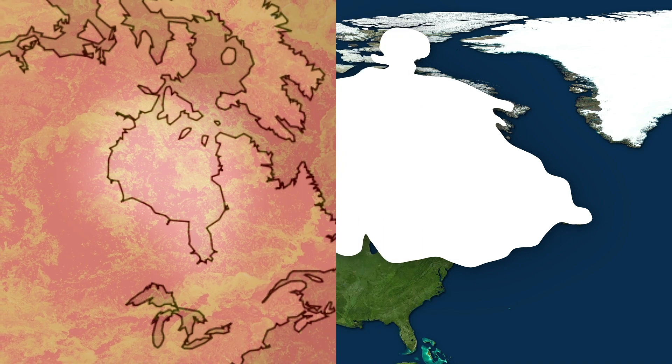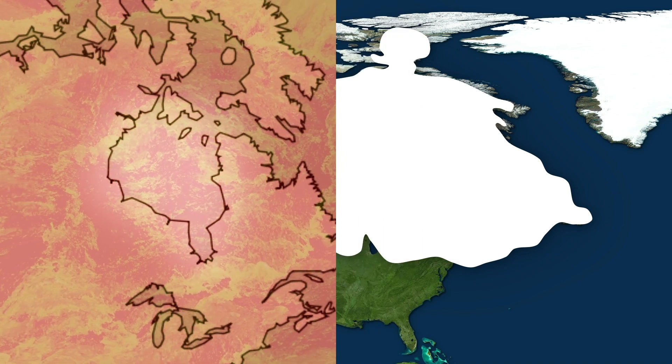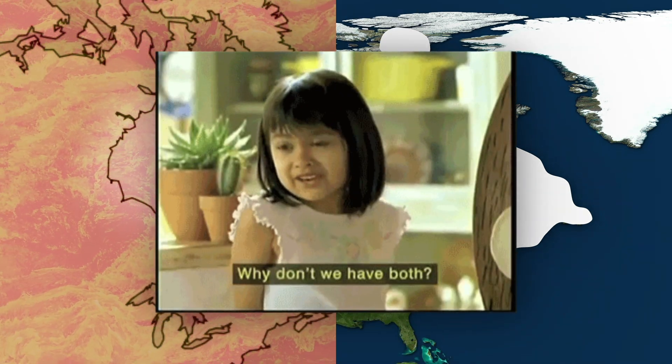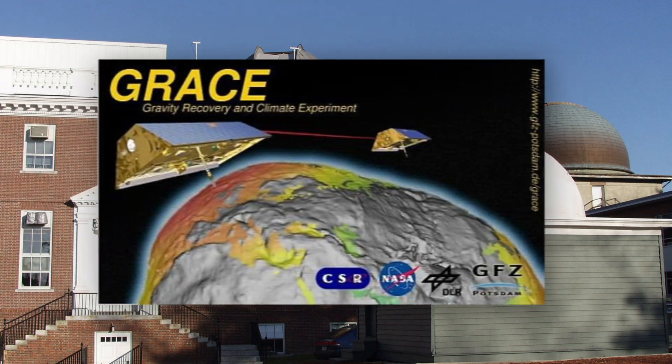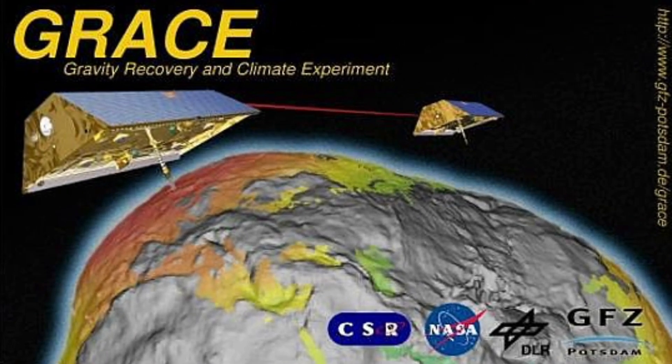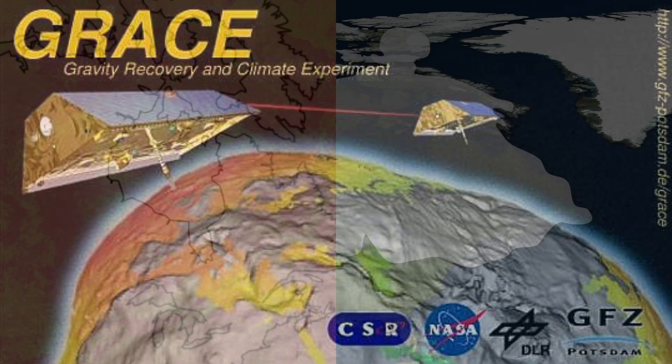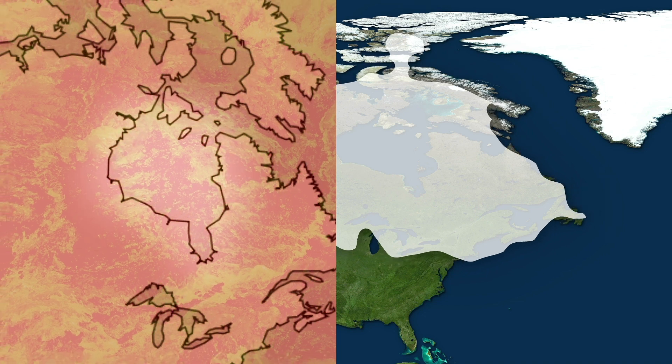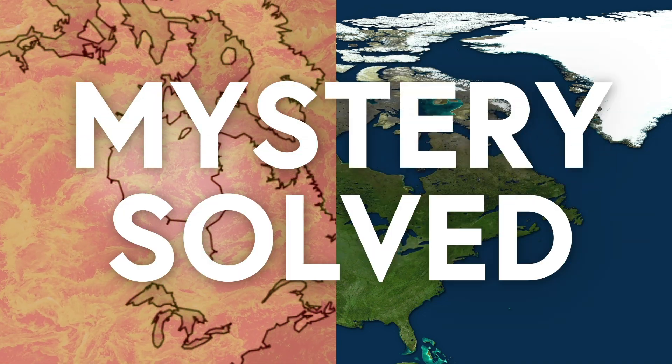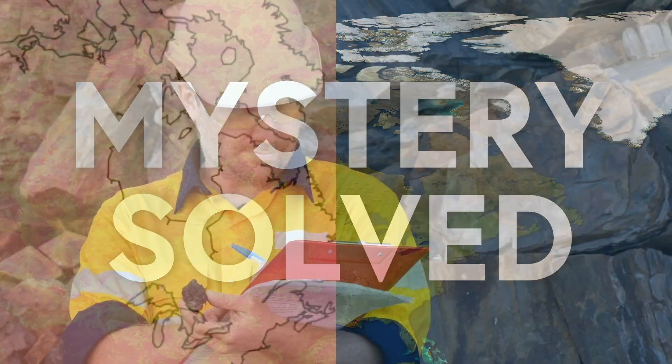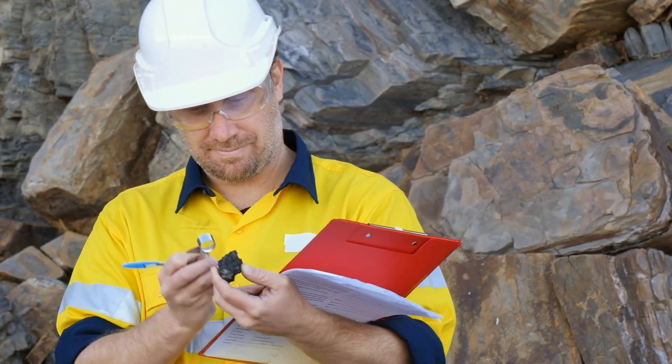So which theory is right? Well, as a certain taco ad once wisely said, por que no los dos? As it turns out, both theories were right. Geophysicists at the Harvard-Smithsonian Center for Astrophysics using satellite data from the Gravity Recovery and Climate Experiment, or GRACE, were finally able to calculate that the rebounding ice sheet and the swirling magma are each causing about half of the missing gravity, and so, the mystery solved. And just to think, gravity might have gotten away with it if it weren't for those pesky geophysicists.